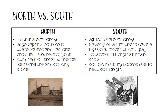Let's take a quick look at the North versus the South before the Civil War. The North had an industrial economy. There were large paper and cloth mills, warehouses and factories, which provided hundreds of jobs to its citizens. There were also hundreds of small businesses like furniture and clothing stores. In the South, they had an agricultural economy. Slavery let landowners have a big workforce without having to pay employees. Tobacco is still Virginia's main crop at this time, although the cotton industry is booming due to the new cotton gin invented by Eli Whitney.